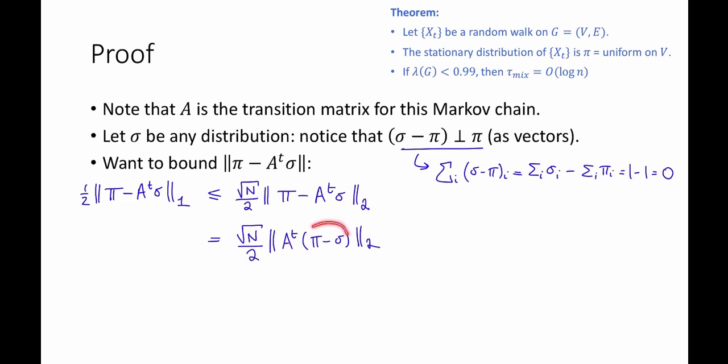But now, we just said that this thing here is orthogonal to pi, and pi was the top eigenvector. So that means that when I hit this vector by A, what's going to happen? Well, this lives in the span of eigenvectors 2 through n. So that means that it's basically only going to get hit by eigenvalues 2 through n.